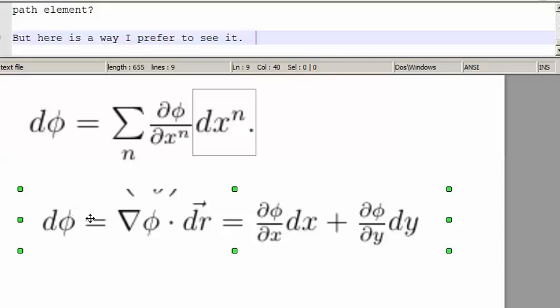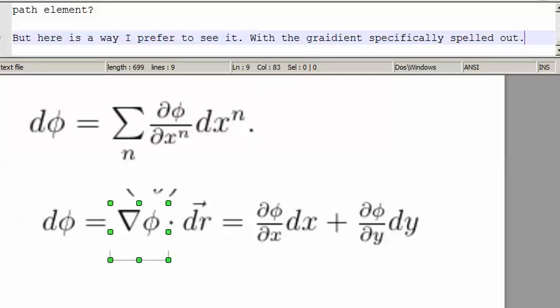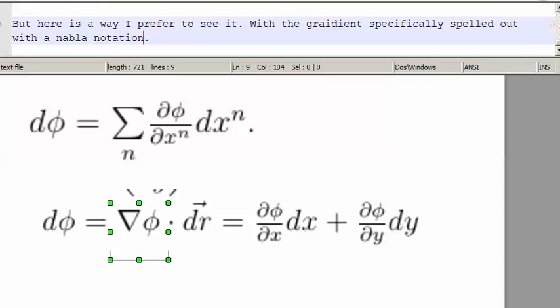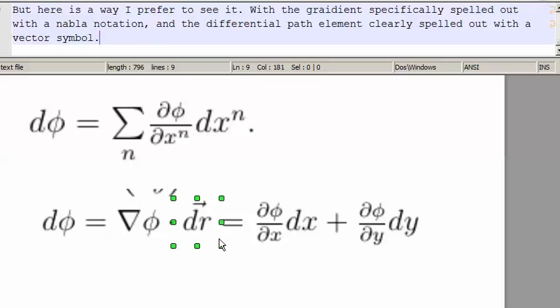But here is a way I prefer to see it, with the gradient specifically spelled out with a nabla notation, and the differential path element clearly spelled out with a vector symbol.